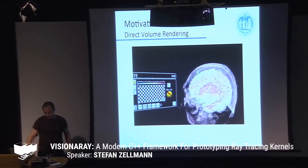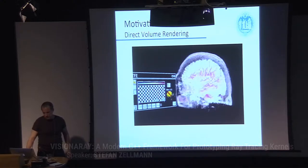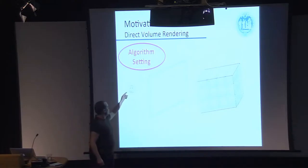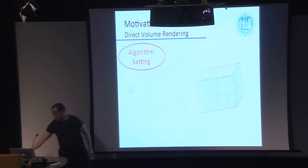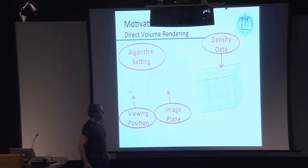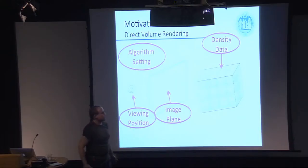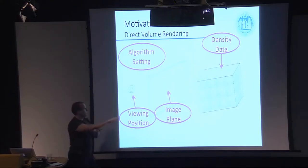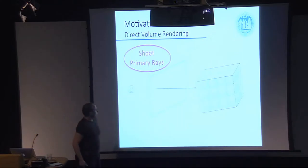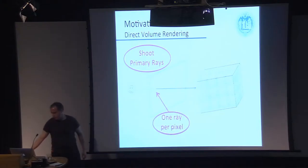You could even watch it in VR. So let's have a look at how that algorithm can be implemented. The basic setting is you've got some virtual viewing position, an image plane, and this data. In this specific case it is an MRI or CT dataset, so you've got stacked images that form a uniform grid, and you want to project that data to the image plane. You shoot primary rays — not only one ray but lots of rays, one for each pixel of the image plane.